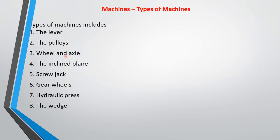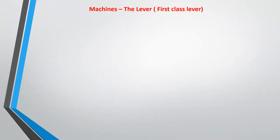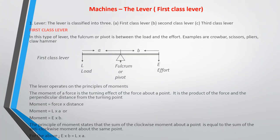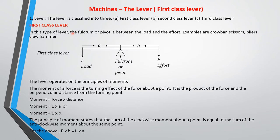Today we are discussing different types of machines gradually. We are looking at the lever. The lever machine is classified into three types: first class lever, second class lever, and third class lever.